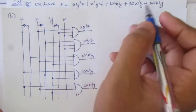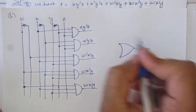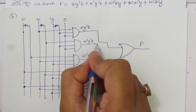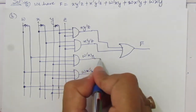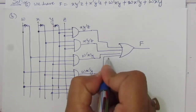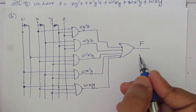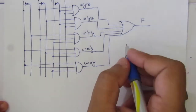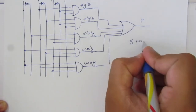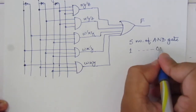Now we have to add all these terms, so we use a 5-input OR gate. The inputs are the outputs of all five AND gates, and we get the function f at the output. This is the logic diagram of the original Boolean expression. We have 5 AND gates and 1 OR gate.